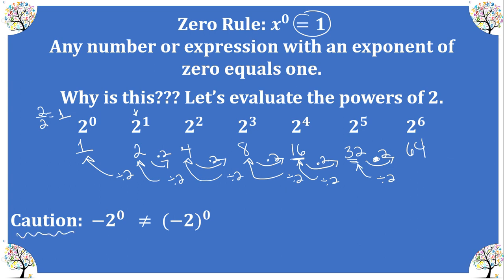Now, I will caution that sometimes we will have a negative 2 to the 0 without parentheses, and then we also have negative 2 raised to the 0 with parentheses. In the first expression, the negative is out front and we have 2 over 2, so this gives us negative 1. In the second expression, the base is negative 2 over itself, giving us positive 1. So when parentheses are used we get positive 1, and when parentheses are not used we get negative 1.